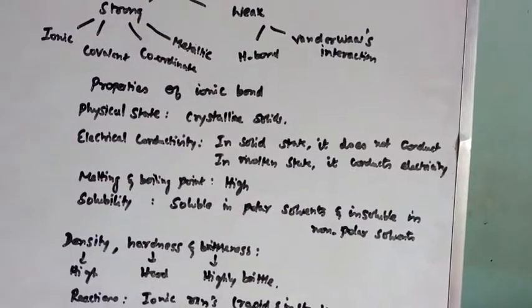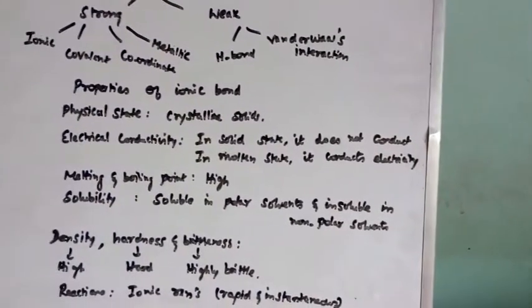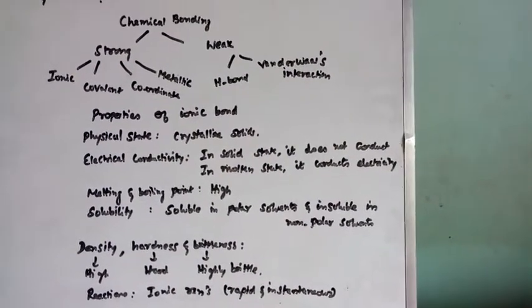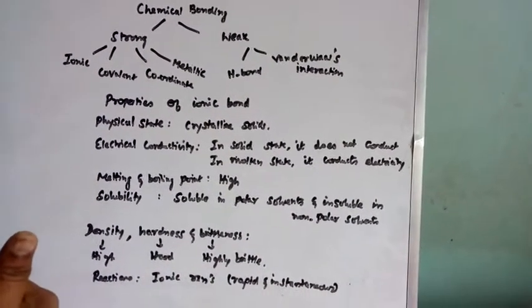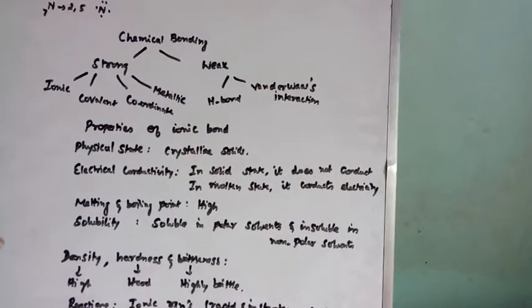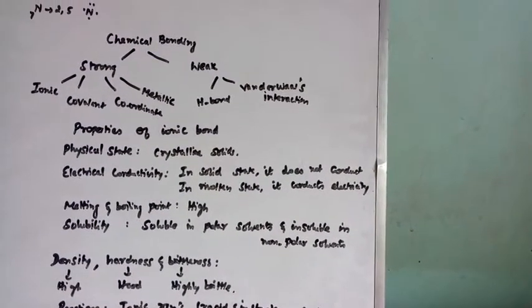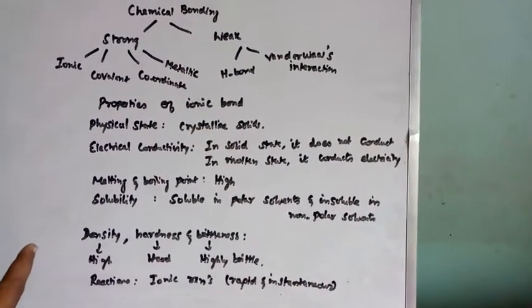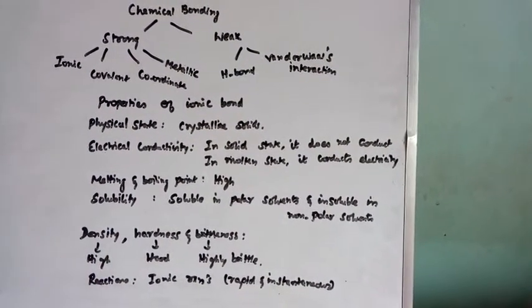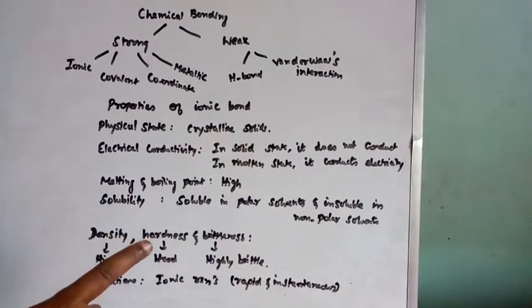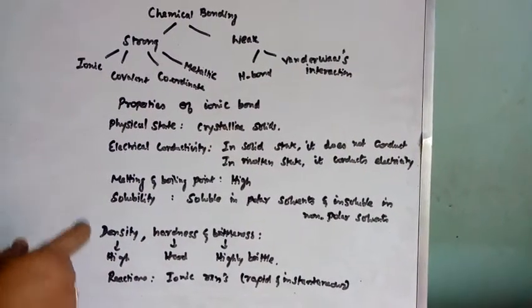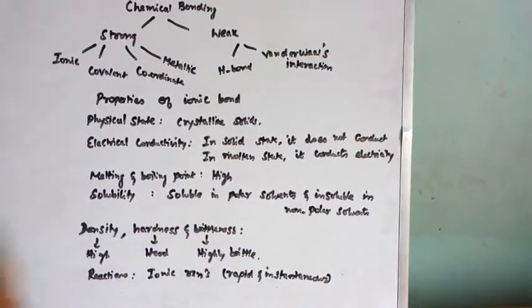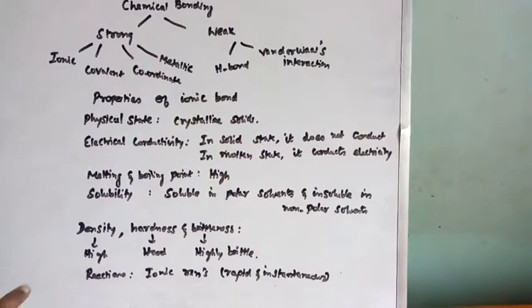Next, melting and boiling point. Ions are held together by strong electrostatic forces of attraction. So bonding will be strong. That is why it requires high amount of heat for splitting. Obviously, these ionic compounds possess high melting as well as high boiling point.